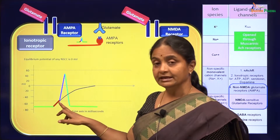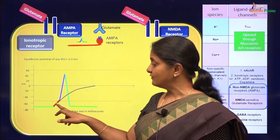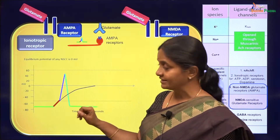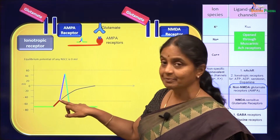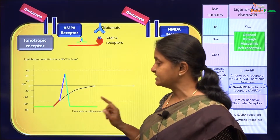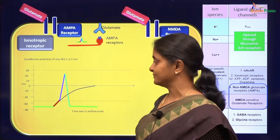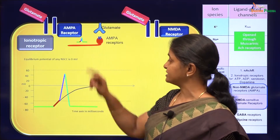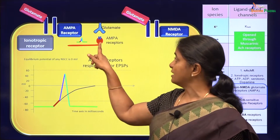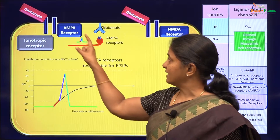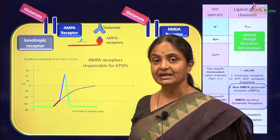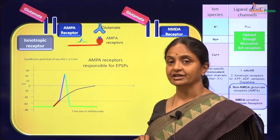Like the nicotinic acetylcholine receptor, the AMPA receptor will attempt to depolarize the membrane, but since the postsynaptic cell has voltage-gated sodium channels, after initial depolarization up to the threshold, what you will indeed see is an action potential. The foot of the action potential in the postsynaptic cell is called an EPSP — an excitatory postsynaptic potential — and the AMPA type of glutamate receptors are responsible for the EPSPs in a postsynaptic neuron.